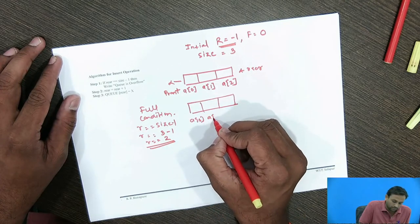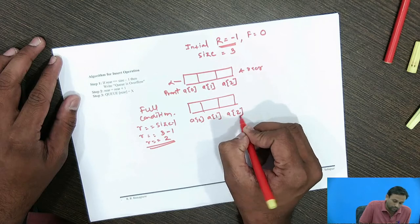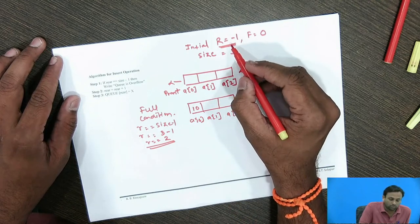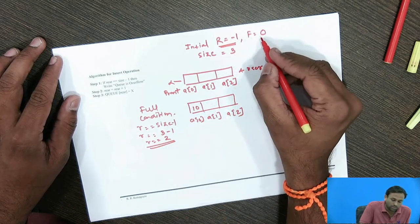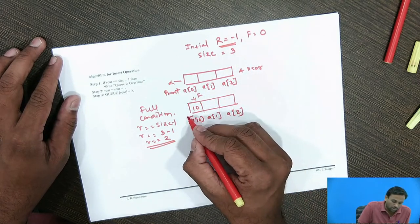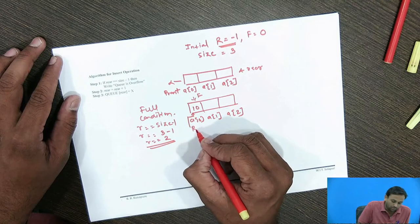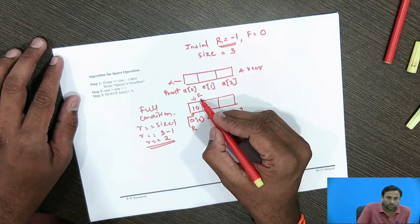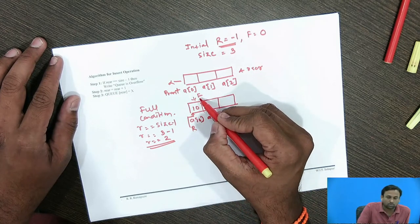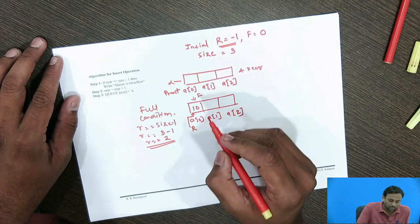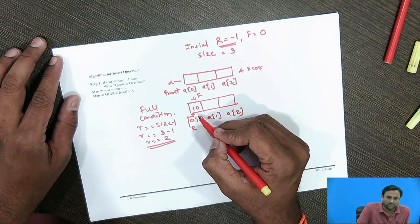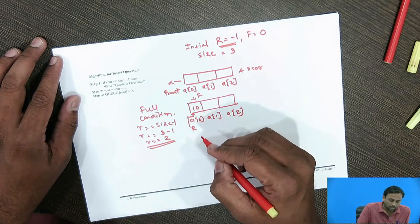After inserting the new element 10, we increment the value of rear. Initially front was at 0 and rear was at minus 1. Now rear points to a[0]. Front and rear always point to the first and last elements respectively. Since 10 is the only element in the queue, it is both the first and last element.